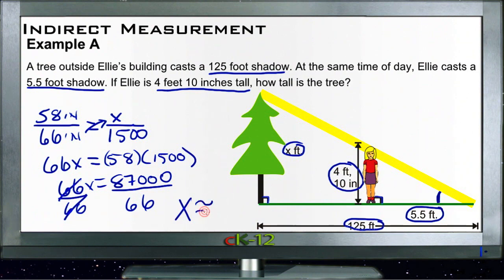87,000 divided by 66 is approximately 1,318. x is approximately equal to 1,318 inches. If we want to figure out how many feet that is, we divide by 12, and we get about 110 feet. So the tree is about 110 feet tall, approximately.